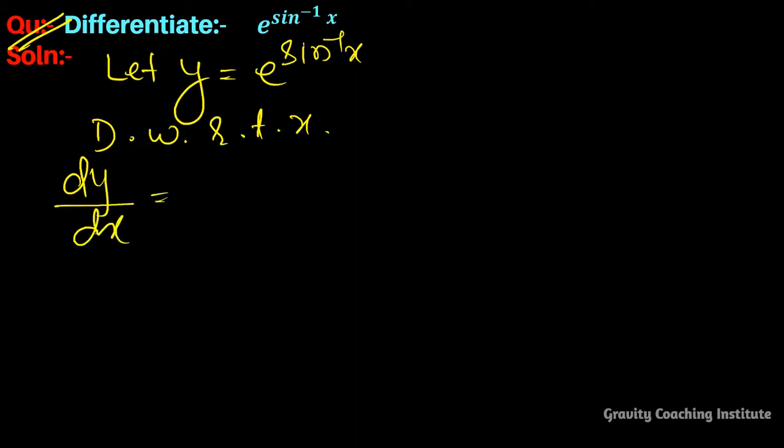Differentiate e to the power sin inverse root x. Let y equal to e to the power sin inverse root x. Differentiating with respect to x, we get dy upon dx equal to e to the power